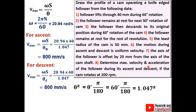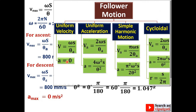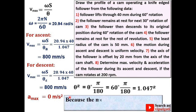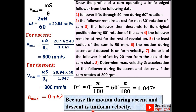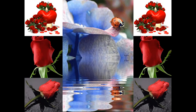For maximum acceleration, the answer is zero. Since the motion during ascent and descent is uniform velocity, the maximum acceleration is always zero. If you want to see more engineering videos, subscribe to my YouTube channel and go to the playlist. Thanks, and press the like button to appreciate this video.